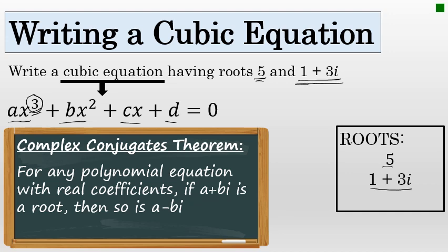In this case, we know that 1 plus 3i is a root, so that must mean that 1 minus 3i is also a root. So we are going to write a cubic equation having the roots of 5, 1 plus 3i, and 1 minus 3i.